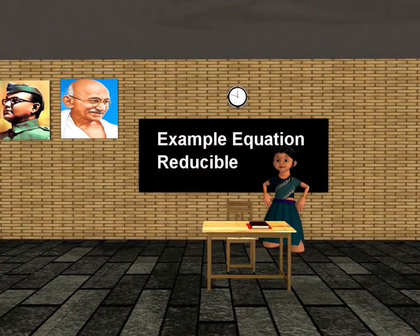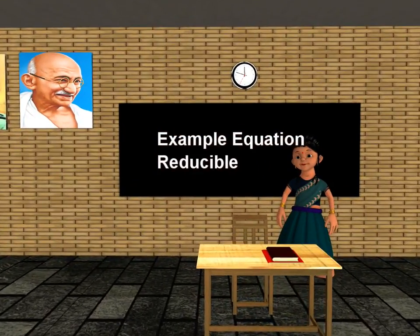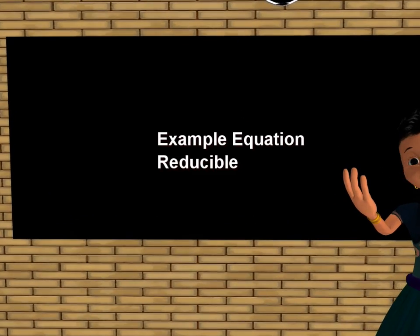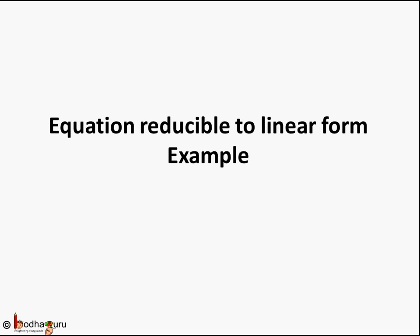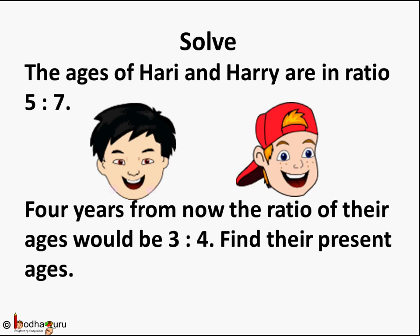Good morning children. Now you know how to reduce the given equation to its linear form. So let us see more examples. Here we are given a problem: the ages of Hari and Harry are in ratio 5 is to 7. Four years from now the ratio of their ages would be 3 is to 4, and we need to find their present ages.